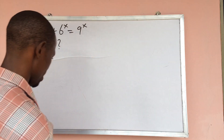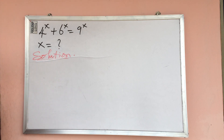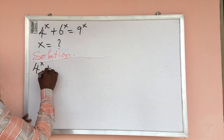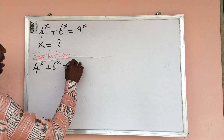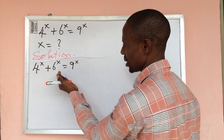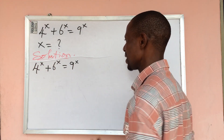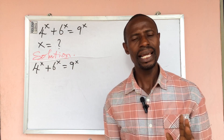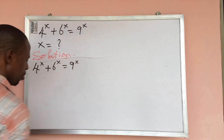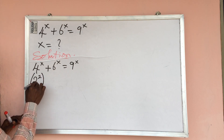Let's take our solution. We put down the question: 4 to the power of x plus 6 to the power of x equals 9 to the power of x. The first thing we do is express these numbers in their simplest form. 4 is a perfect square, 9 is a perfect square, but 6 is not a perfect square. We use prime factorization to break it down. So 4 can be written as 2 to the power of 2, all to the power of x.